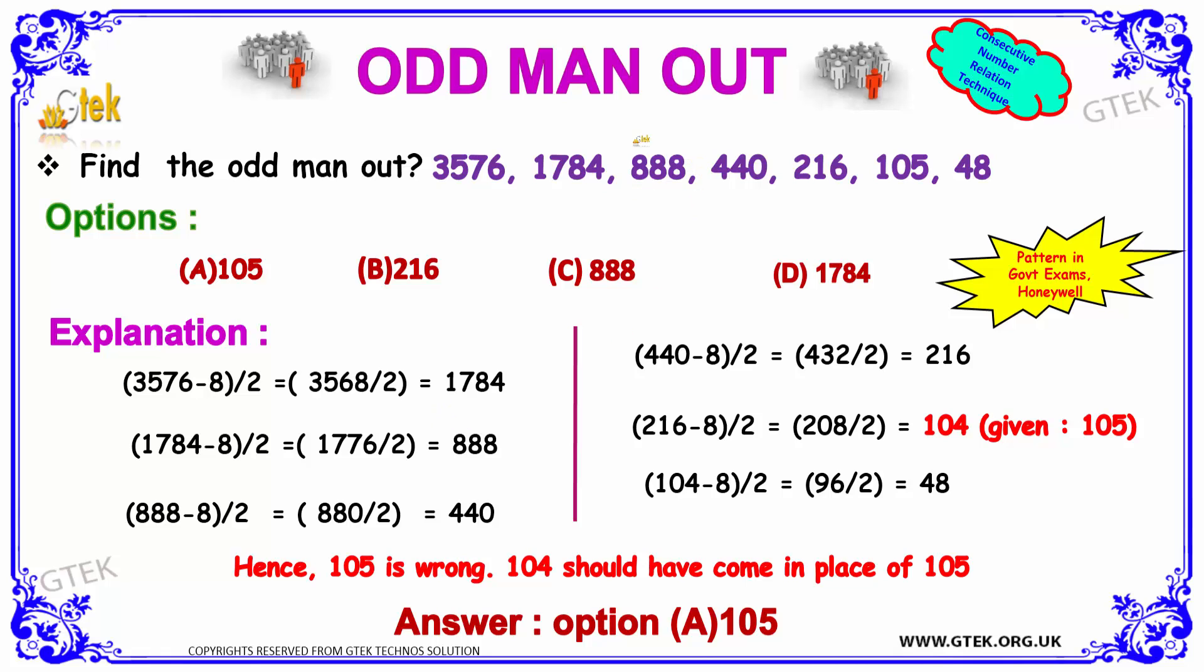The same logic I am trying to apply between these two: 888 minus 8 divided by 2, that's 880 divided by 2, that's 440. The same logic I am trying to apply here: 440 minus 8 divided by 2. We got 432 divided by 2, that's 216.